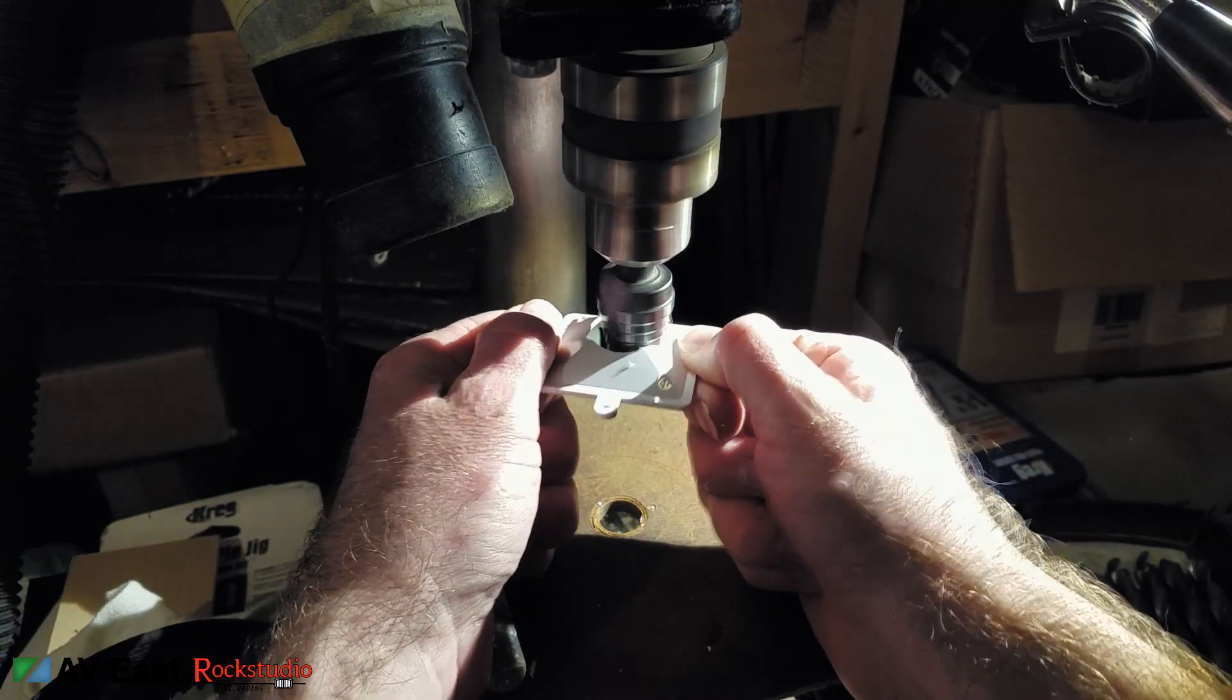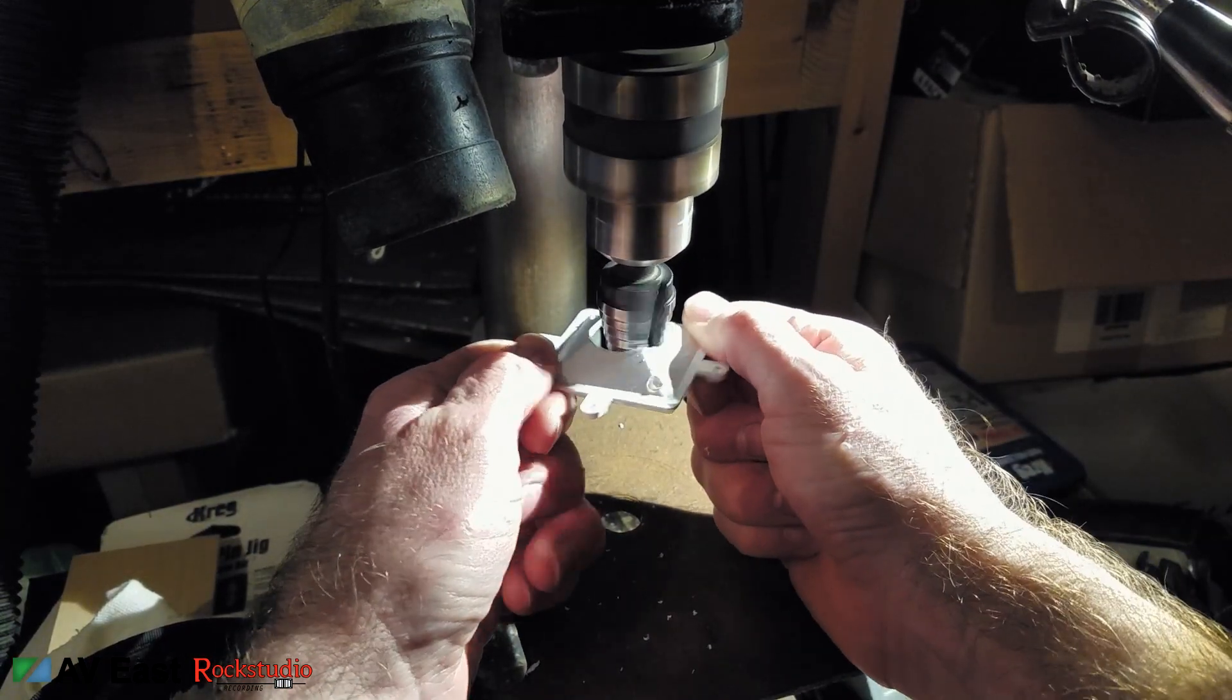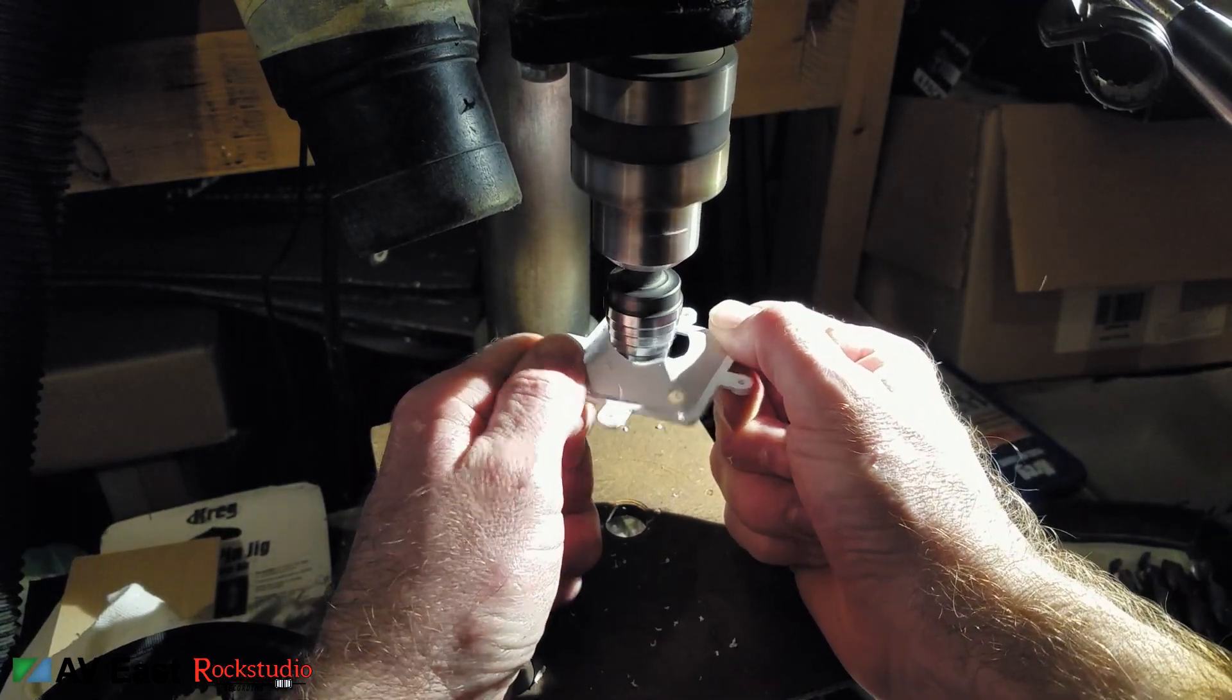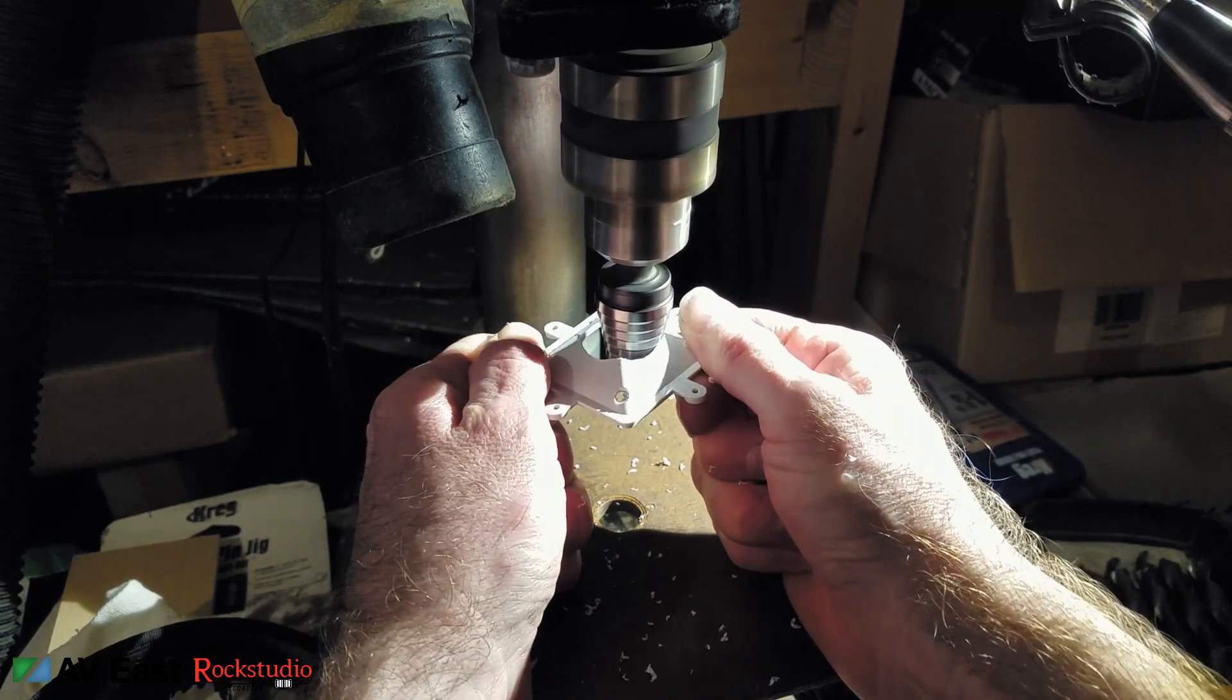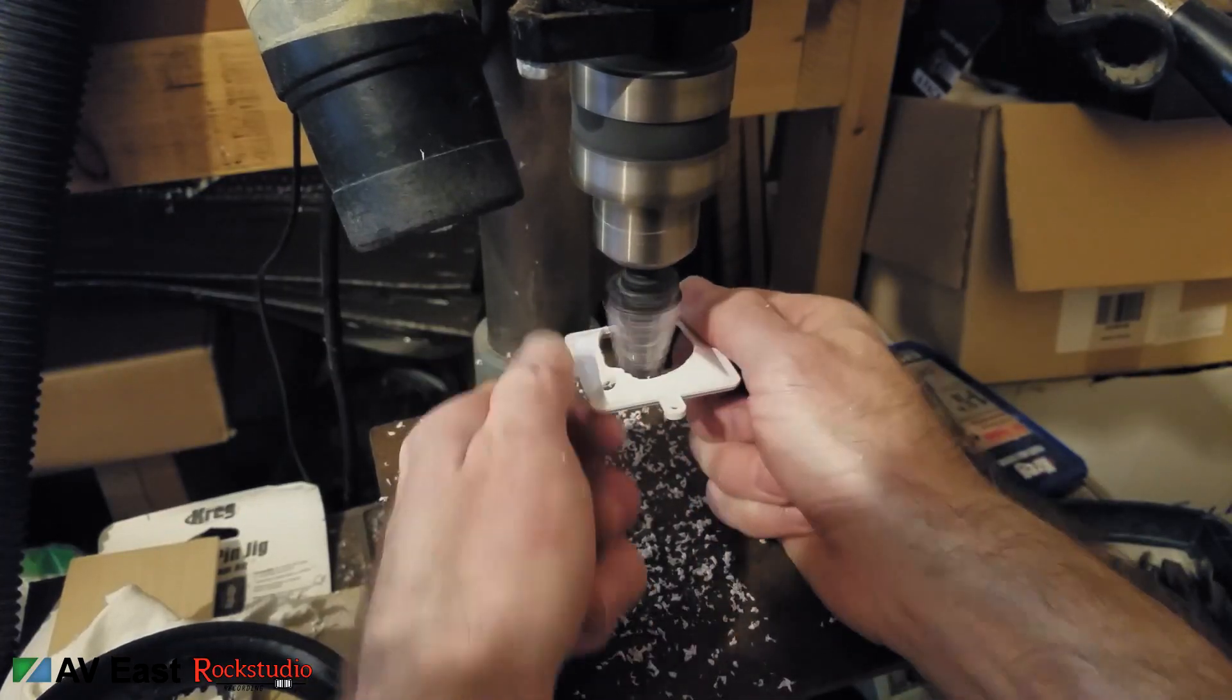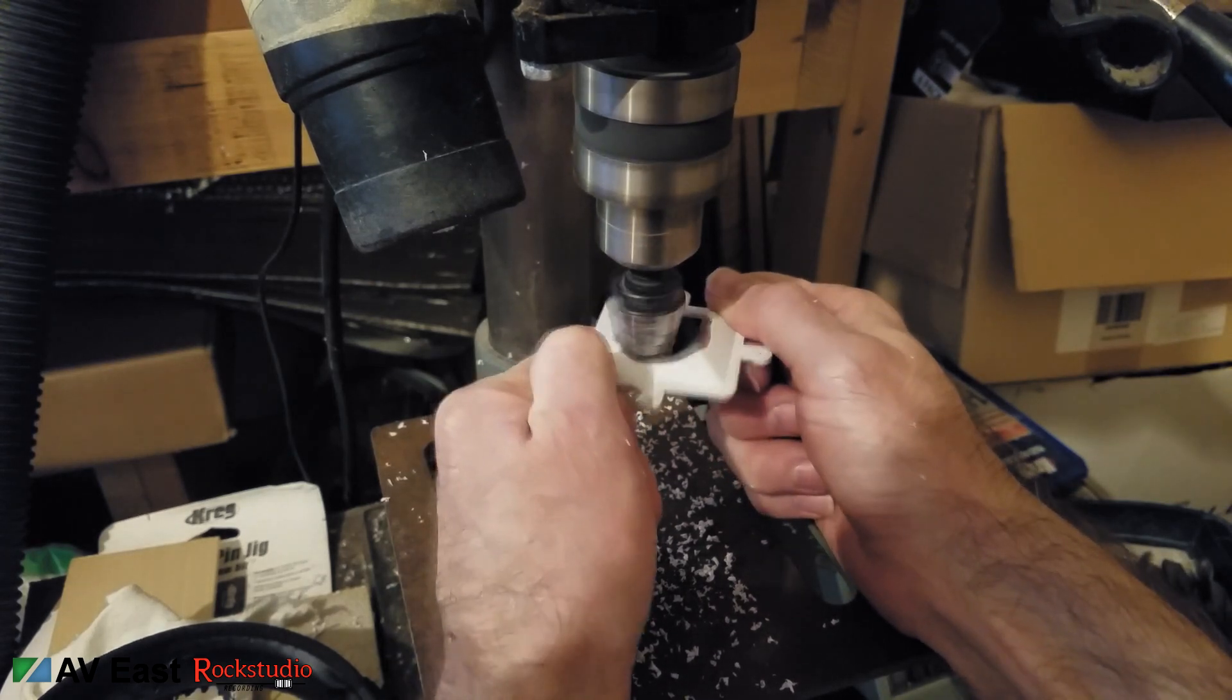Now you'll notice that even though we went all the way up to one inch hole with the step bit the hole still isn't big enough. So we're gonna enlarge the hole by using the step bit and just working it along the inner diameter of that hole to widen it slowly.